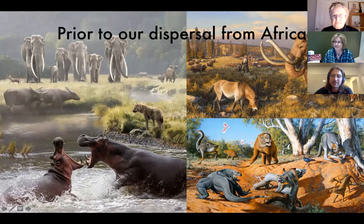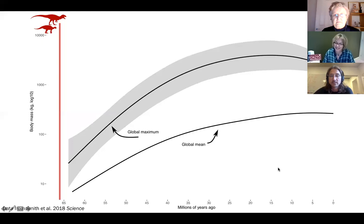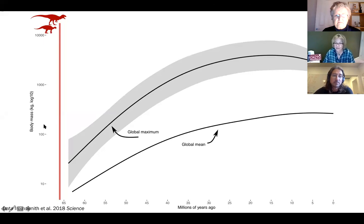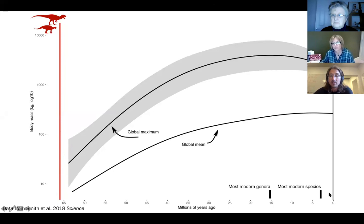This thing on the left here is the mihirung, a 400 kilogram flightless goose — just super weird. And just to show you this graphically: the x-axis here is millions of years ago, so this is time with the present at zero, and the y-axis is body mass of the world's mammal communities. This vertical bar is when the dinosaurs went extinct around 66 million years ago.